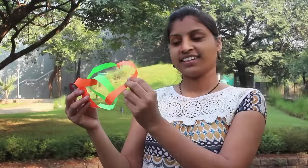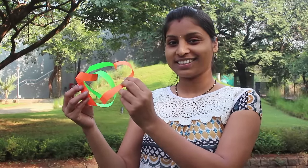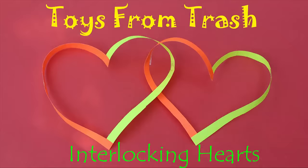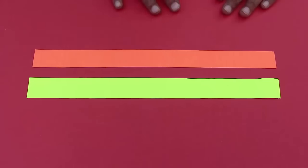In this program, using two colored strips of paper, we will make these two interlocking hearts. To make these interlocking hearts, you need two strips of colored paper 20 centimeters long and 3 centimeters wide, glue, cellotape, and scissors.